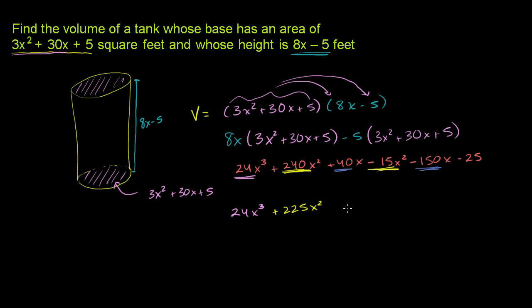That's adding that term to that term right over there. And then we have 40x minus 150x. That would be negative 110x. And then finally we have just this negative 25 out here. That's the only constant term. And we're done. We found the volume of the tank. It's given by this polynomial expression right here. So this right here is the volume of the tank. It's equal to 24x to the third plus 225x squared minus 110x minus 25.